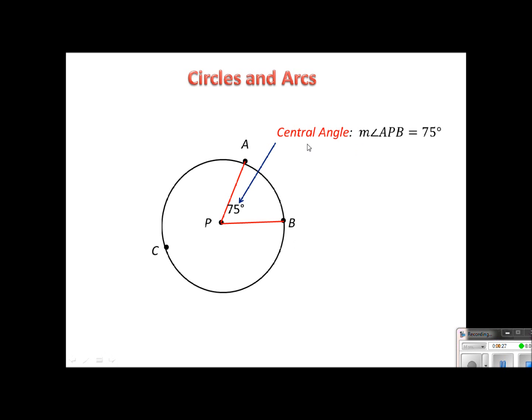And we would write it like this. The measure of angle APB, so we would use these three letters here, we could go in the reverse order as well, equals 75 degrees.